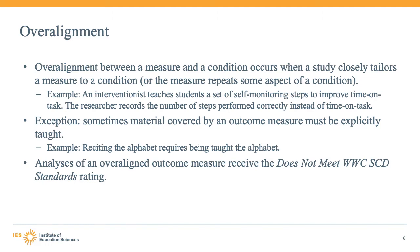Consider a single-case design study where an interventionist teaches students a set of self-monitoring steps to improve time on task. Say the researcher was conducting a treatment reversal withdrawal design where they then record the number of steps performed correctly during each baseline and treatment phase. The outcome of time on task is operationally defined as the number of steps performed correctly rather than time on task. This outcome measure does not provide a fair test of the intervention condition because it is overaligned with the intervention — providing self-monitoring steps to students — and may provide an unrealistically favorable assessment of the effect of the intervention.